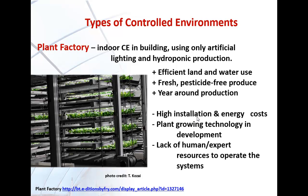The next type of controlled environment is the plant factory — inside a building using artificial lighting and recirculating hydroponic nutrient systems for the root zone. It is a very efficient use of space, particularly valuable in urban areas, with 100% water recycling and fresh, pesticide-free produce. The multiple layers require indoor artificial lighting, which adds to operational expense. The technology is still in development, and there is currently an insufficient amount of human experience and expert resources to operate these systems, but they are developing extensively.